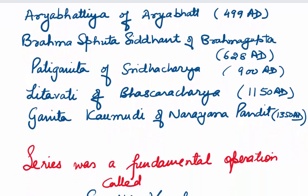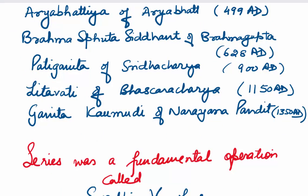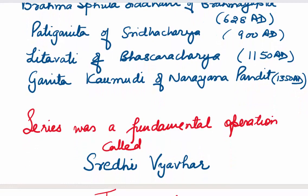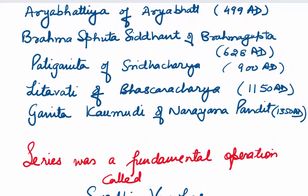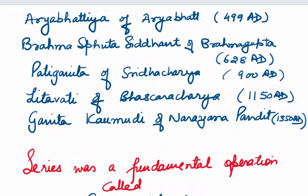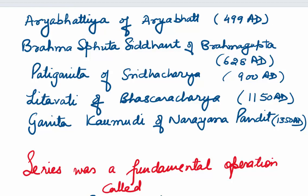Let's come to some of the books written by famous mathematicians of different times: Aryabhatiya of Aryabhatta (499 AD), Brahmasphutasiddhanta of Brahma Gupta (628 AD), Pati Ganita of Shridharacharya (900 AD), Leelavati of Bhaskaracharya (1150 AD), and Ganita Komadi of Narayana Pandit (1350 AD). In all these books, which were taught at that time, series is used as a fundamental operation — they are called 'Shriddi Vyavara'. This shows that series played a very important role during our ancient times.